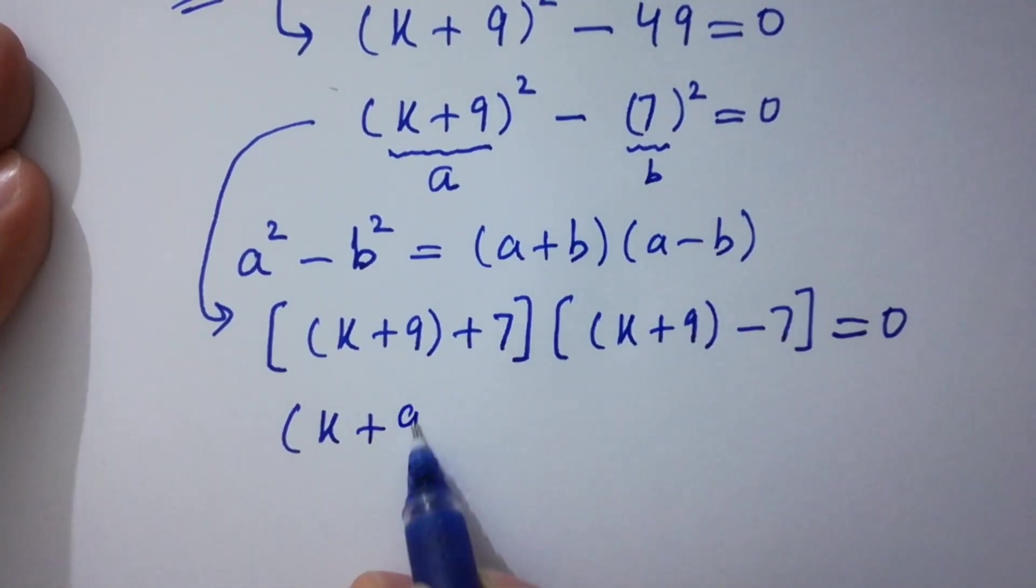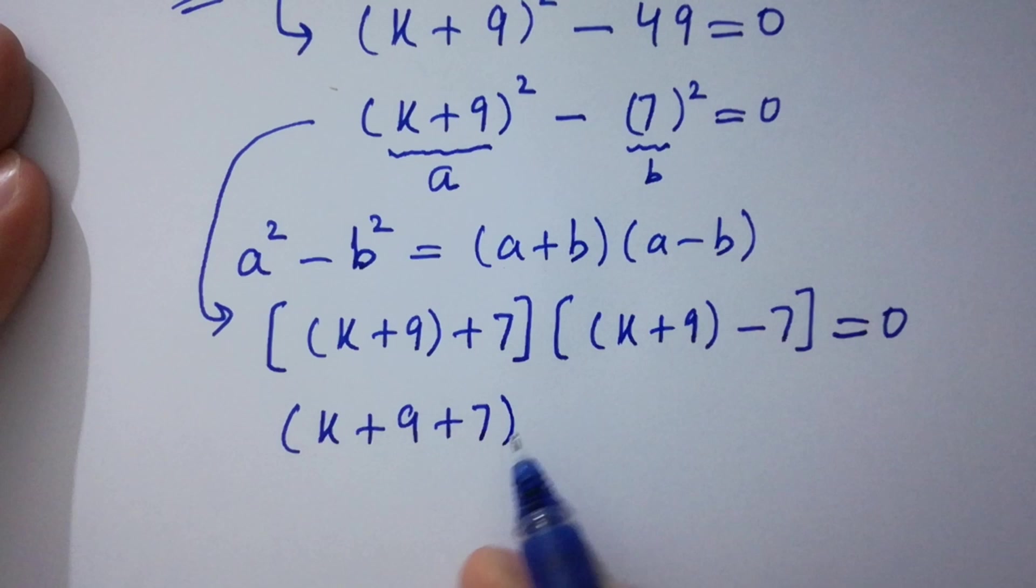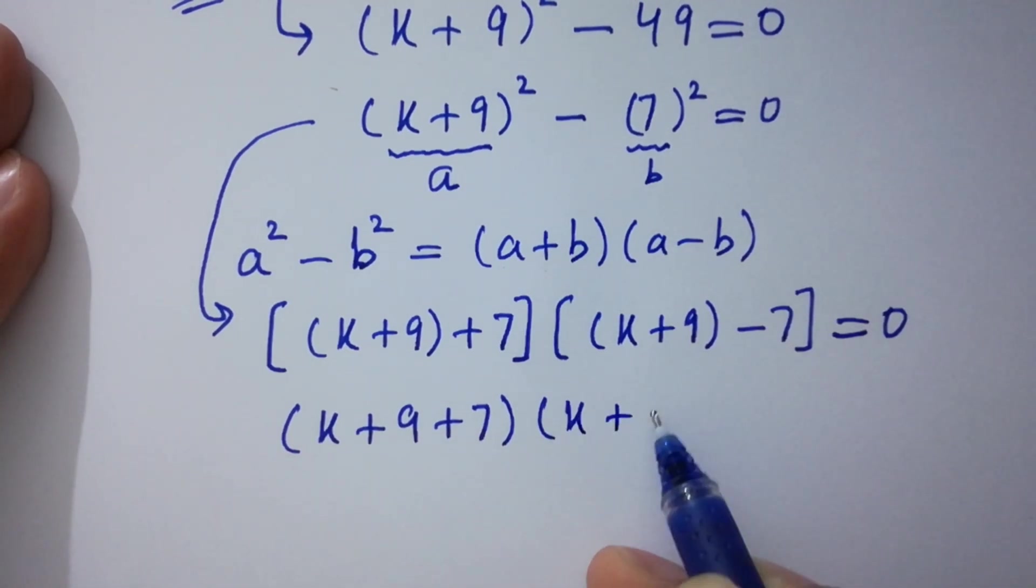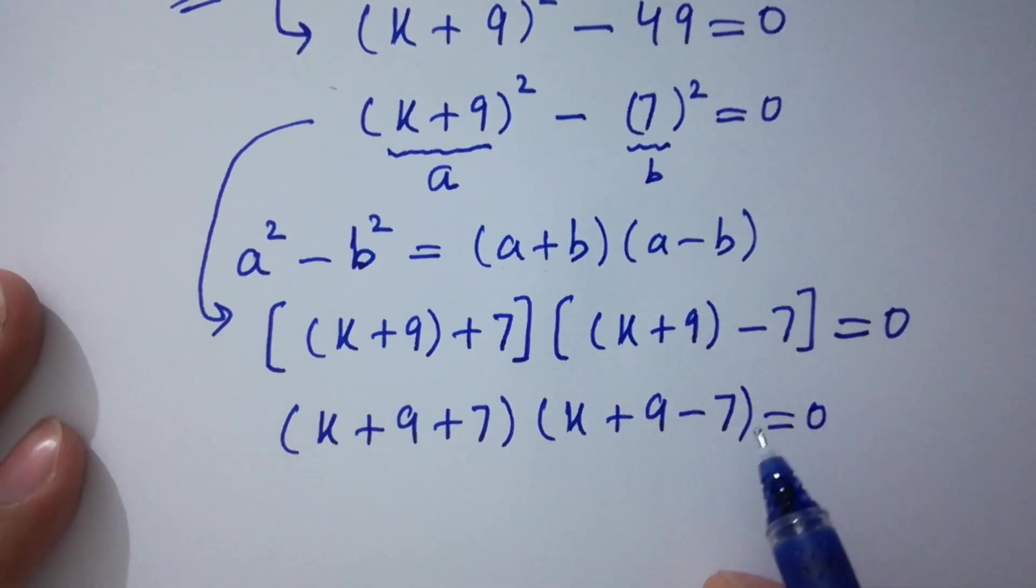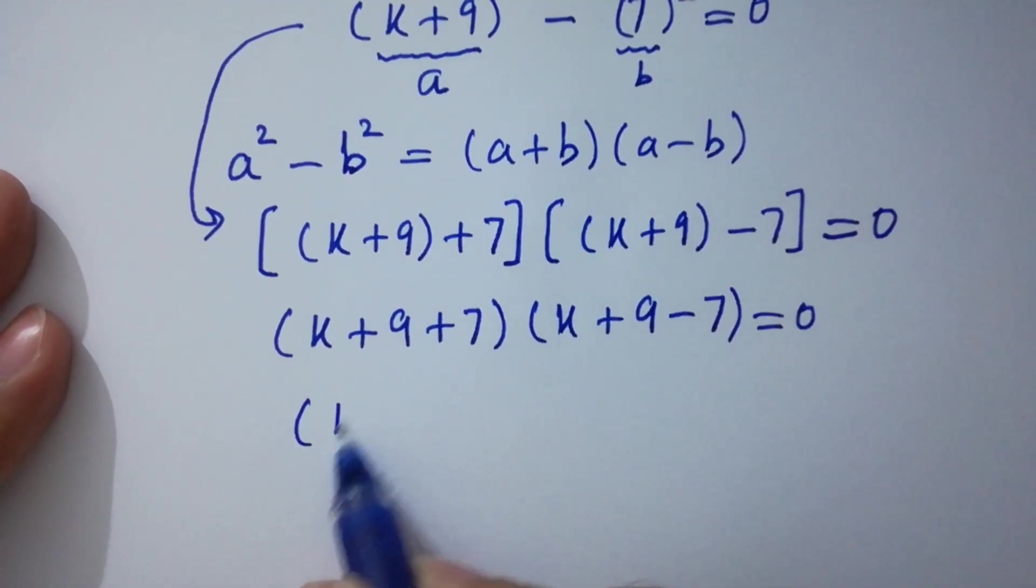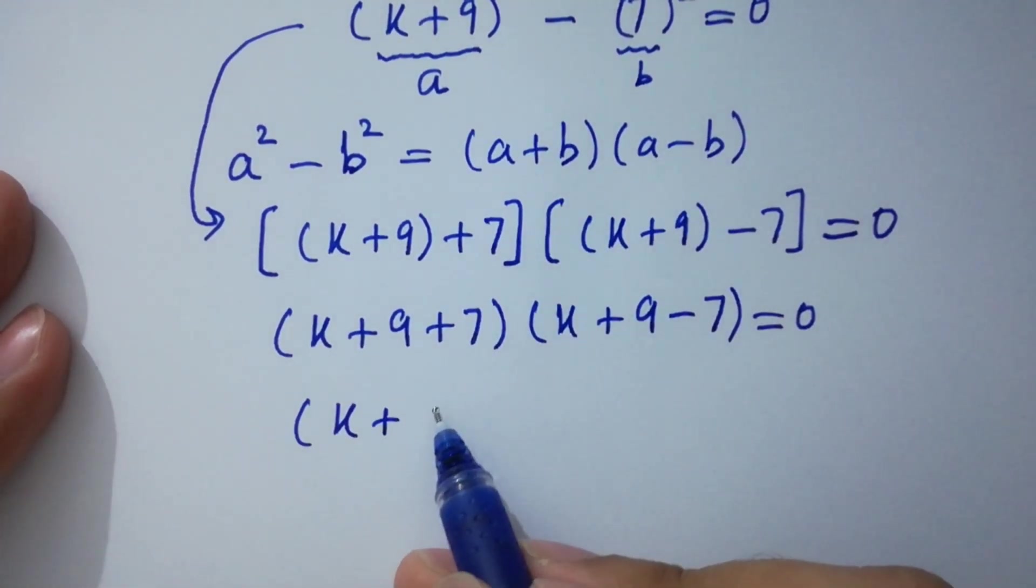k + 9 + 7, k + 9 - 7 equal to 0. k + 9 + 7, we have here 16.